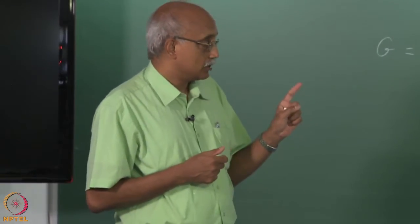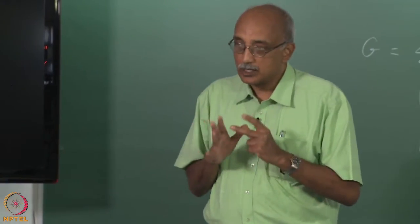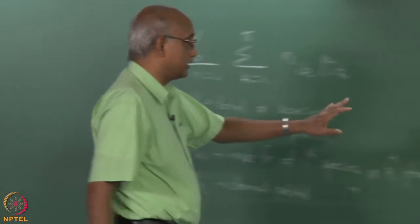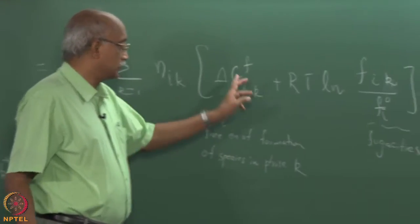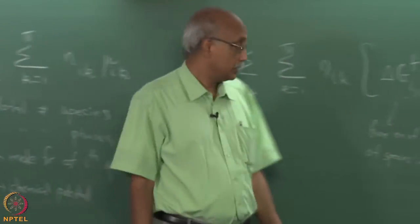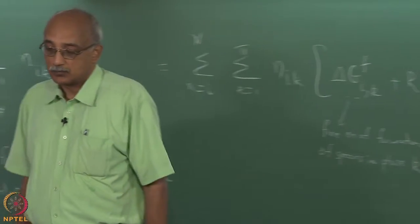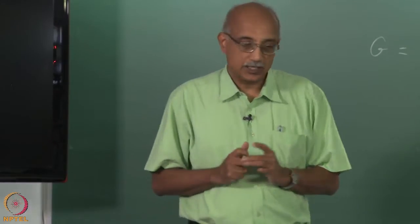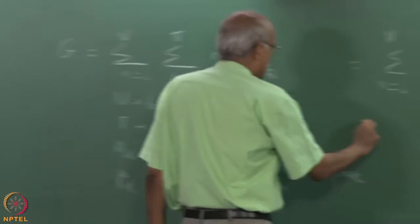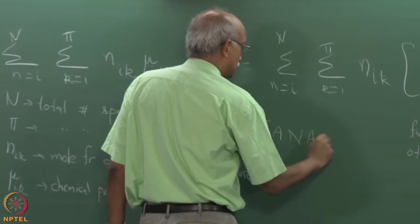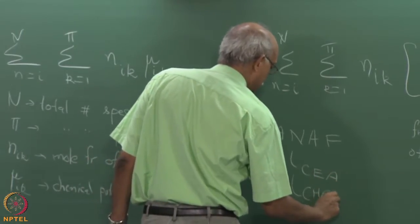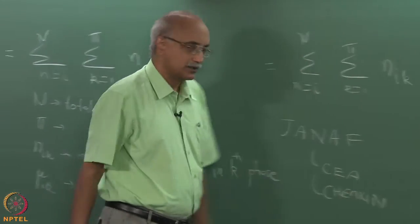The other part of this is you need a good database of thermochemical properties of all possible species in the system, because for every species i you need to know delta G_f, f_ik, and f_i0 for species present in various phases — gas, liquid, solid and so on. There is something called the JANAF thermochemical database which is coupled with programs like CEA and CHEMKIN and a few more packages.